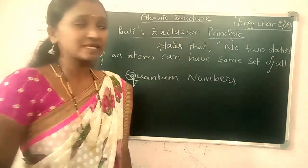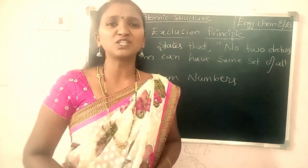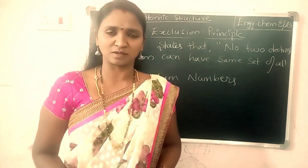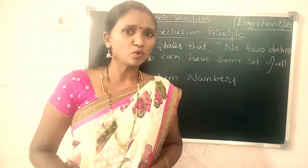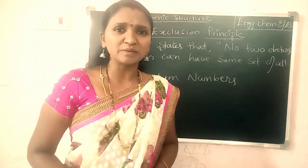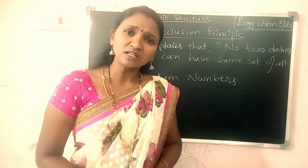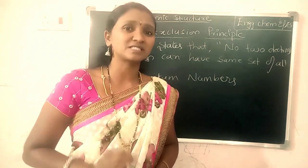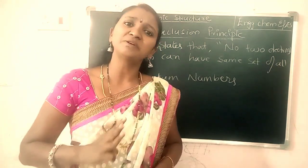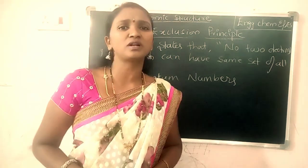Pauli's Exclusion Principle states that no two electrons can have the same set of all four quantum numbers. This means any two electrons in an atom cannot have all four quantum number values the same. They may differ by at least one quantum number value - even if three quantum number values are the same, at least one must be different.